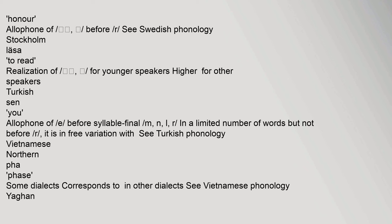Turkish: allophone of /e/ before syllable-final /r/, /n/, /l/ in a limited number of words; but not before /r/ it is in free variation; see Turkish phonology. Vietnamese Northern: 'pha' (phase) — some dialects; corresponds to a different vowel in other dialects; see Vietnamese phonology. Yagen Mepi: 'read'.